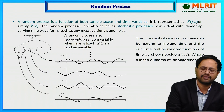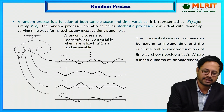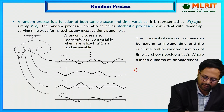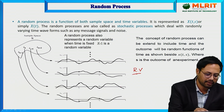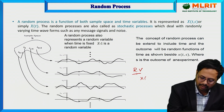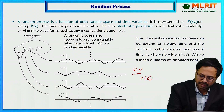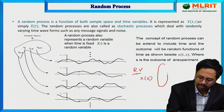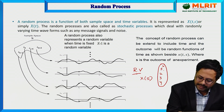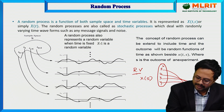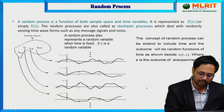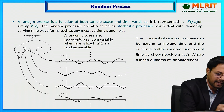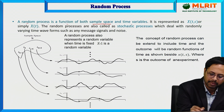First, what is the definition of random process? Before discussing that, what is the definition of random variable? A random variable is a function of only the sample space. X is a function of only the sample space. For example, we have a sample space with sample points, and each sample point is mapped to the real axis. Similarly, a random process is a function of both sample space and time.